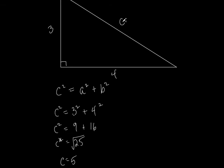We're finding the length of a side, so we only use the positive value. C is equal to five. And that's one of our special triangles — it's a three, four, five special right triangle.